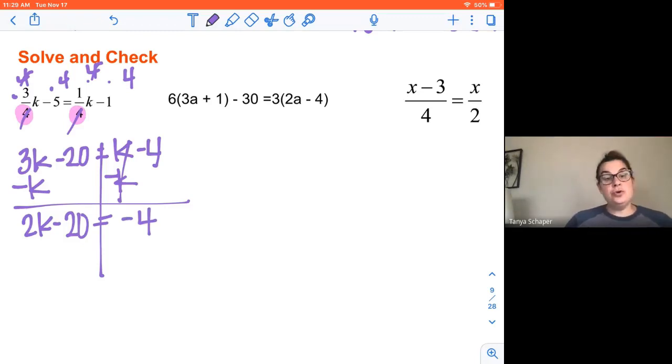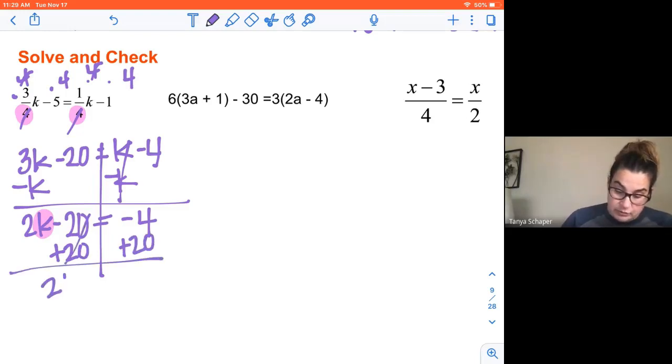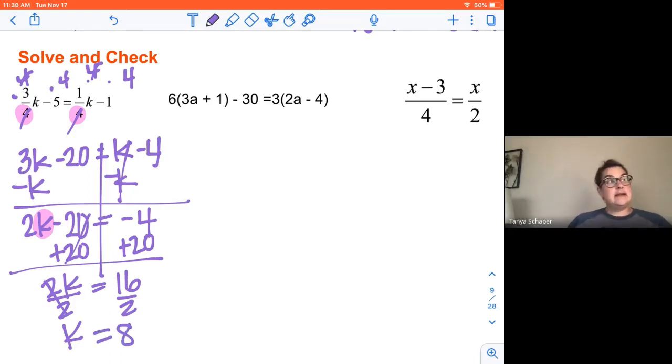And I'm going to undo now that minus 20 because I really want to work on getting this K by itself. So I'm going to undo minus 20 by adding 20 to both sides. So 2K is equal to 16. And I'm going to undo the multiplication 2 times K. I'm going to undo that by dividing by 2. So K is equal to 8.